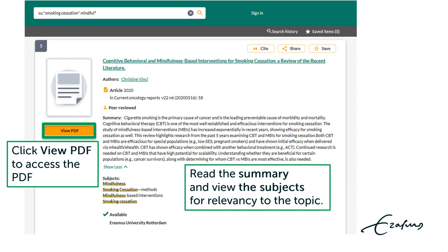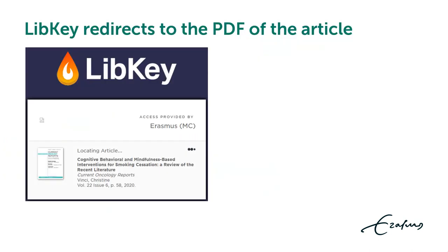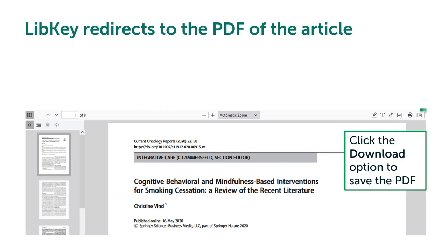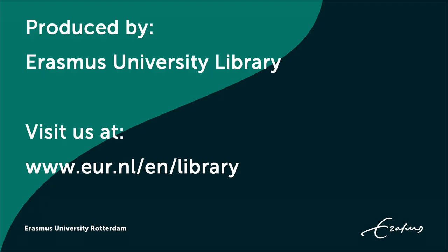Click 'view PDF' to access the PDF. LibKey redirects to the PDF of the article. If asked, select your account and log in with your earner ID. Click the download option to save the PDF. To find out more, visit us at the university library website.